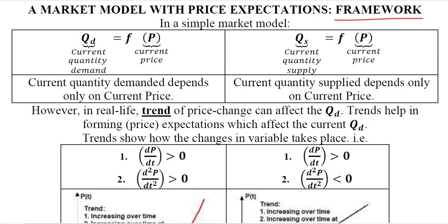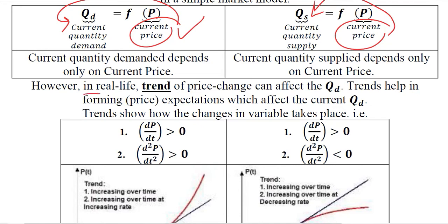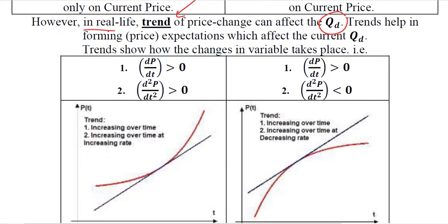We start with a basic demand function: the current price determines the current quantity demanded, and the current price determines the current quantity supplied. This is the conventional wisdom. However, in real life, the trend of the price can affect the quantity demanded as well as quantity supplied.